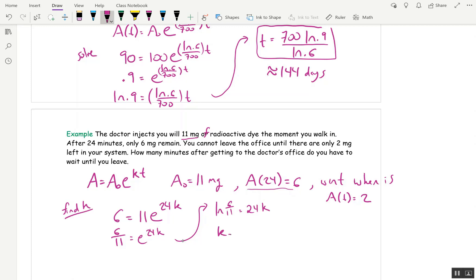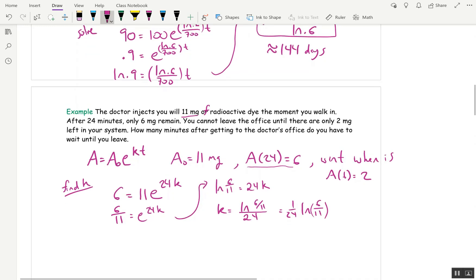Ln of 6 over 11 is 24k. So k is ln of 6 over 11, all divided by 24. Or you could write that as 1 over 24 ln of 6 over 11. Same thing. Okay. So now our formula is a little better. Now we can make this formula a little less vague.